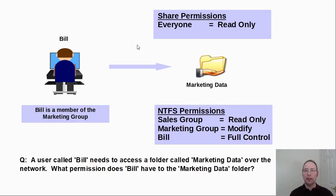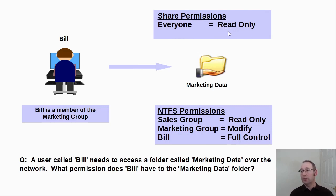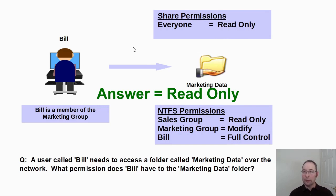Well there's a really easy and simple rule: the most restrictive permission applies. So as we can see the everyone group, which Bill is a member of, has read only permission, and read only is more restrictive than modify and full control. So read only wins.